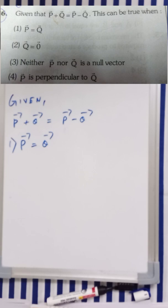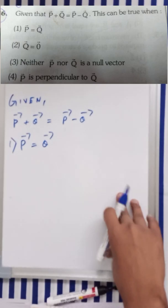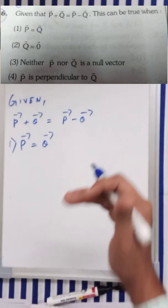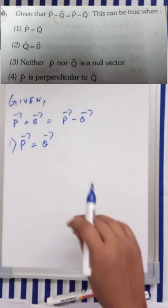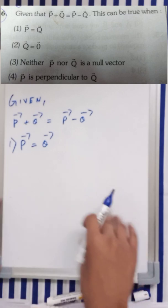p vector is perpendicular to q vector. Now many students get confused between the second option and the fourth option, so we'll be exploring all four options and then we'll talk about why the fourth is wrong and why the second is correct.